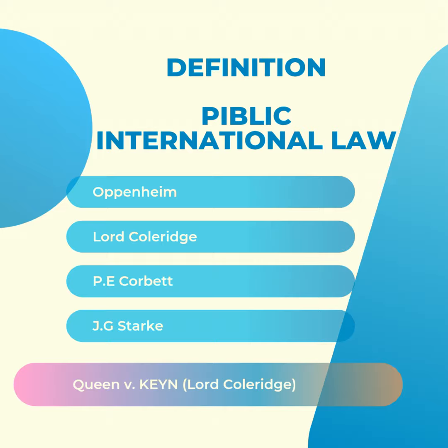J.G. Stark defines international law as that body of law which is composed, for the greater part, of the principles and rules of conduct which states feel themselves bound to observe, and therefore do commonly observe, in their relations with each other, and which also includes: first, the rules of law relating to the functioning of international institutions or organizations, their relations with each other, and their relations with states and individuals; and second, certain rules of law relating to individuals and non-state entities, so far as the rights or duties of such individuals and non-state entities are the concern of the international community.